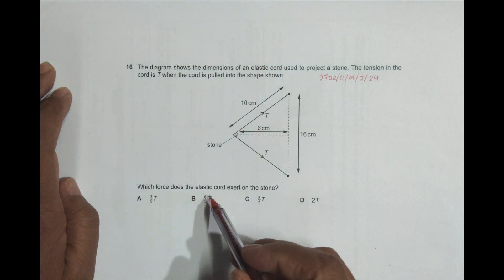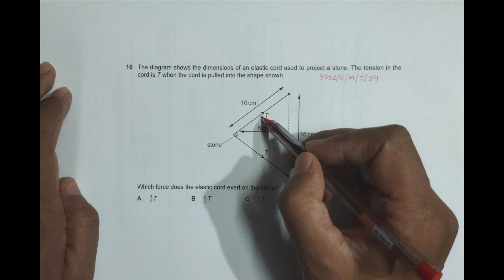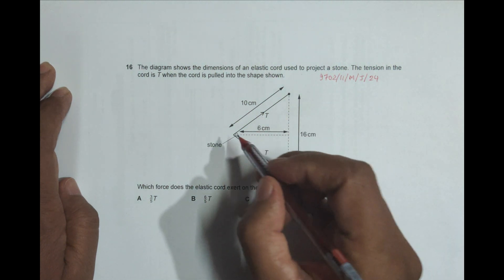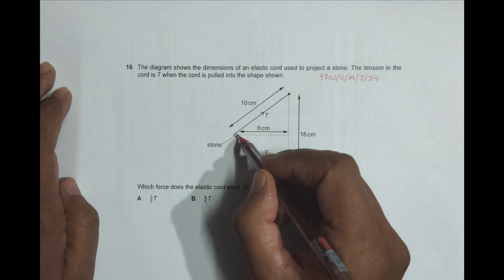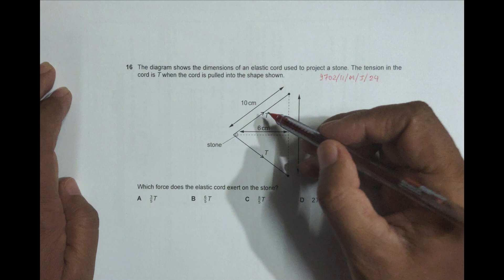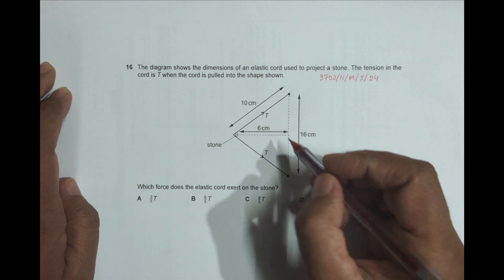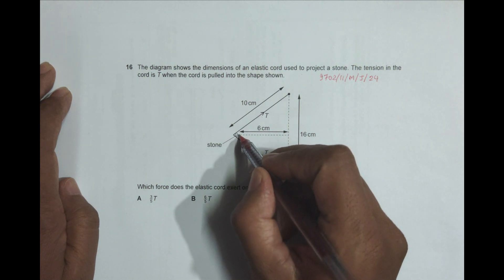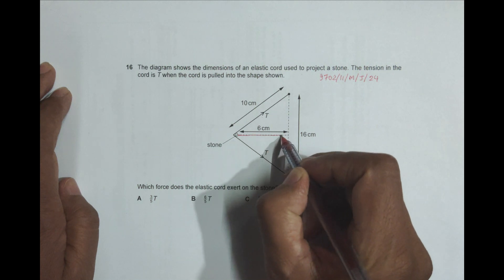Which force does the elastic cord exert on the stone? The force along this direction is T, and along this direction is T. Now we have to find the resultant force on this stone, which will be acting somewhat like this. Since T and T are equal, we can safely state that the resultant force will be in this direction, exactly in between them.